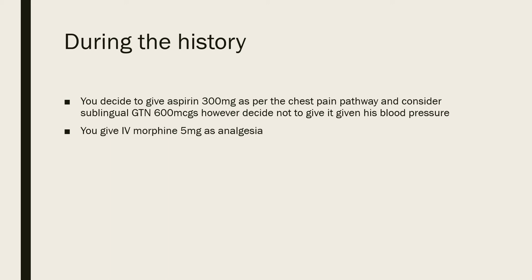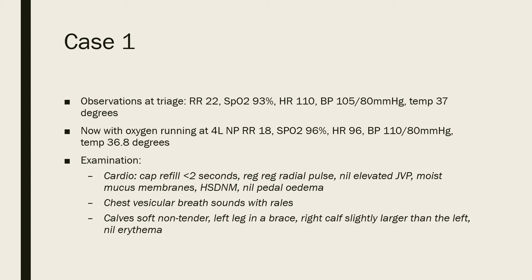While taking the history, aspirin 300mg is given following the chest pain pathway. GTN is considered but withheld due to his low-ish blood pressure, as GTN can drop blood pressure further. Analgesia is given instead — morphine 5mg IV — as he appears to be in significant pain.